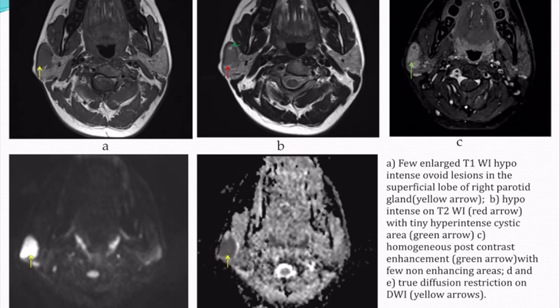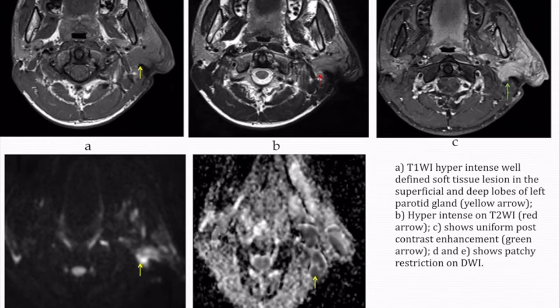Axial MRI images showed a few well-defined T1 hypo-intense lesions in the superficial lobe of the right parotid gland, appearing hypo-intense on T2-weighted images with a few tiny hyperintense areas within. The lesions showed homogenous post-contrast enhancement with a few non-enhancing areas. True diffusion restriction was noted. The diagnosis given was Warthin's tumor based on multiplicity and imaging findings, which was confirmed on pathology.